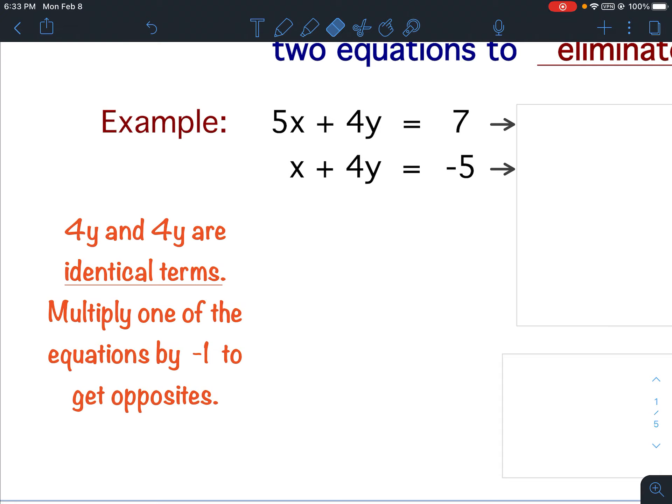But we don't just multiply one term. We have to multiply the entire equation. Remember, equation is a balancing act. So what you do to one side, you must do to the other side. Since 4y and 4y are identical terms, we will multiply one of the equations by negative 1 to get opposites. Take a moment and get all of this written down.